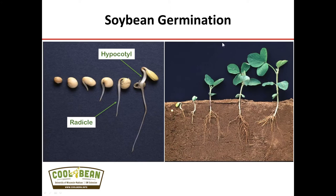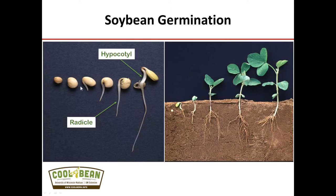The first thing we have to look at is soybean germination. The soybean germination process can take anywhere from three days up to three weeks based on soil temperature and soil moisture conditions. So after we place that seed in the soil surface, we begin the germination process where we imbibe water. The first structure that you will see coming out of the soybean seed would be a radicle, or the root, followed then by the hypocotyl.